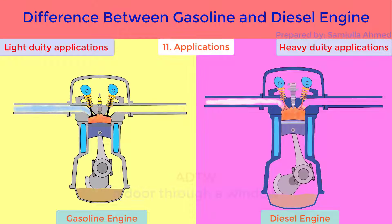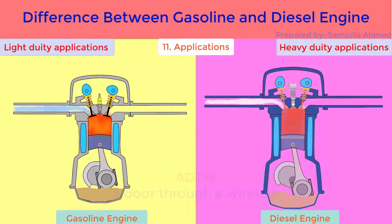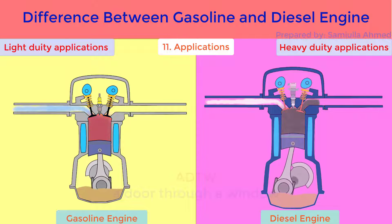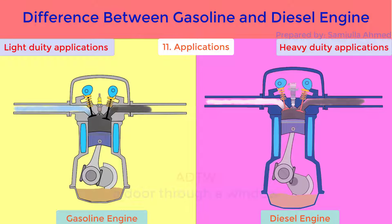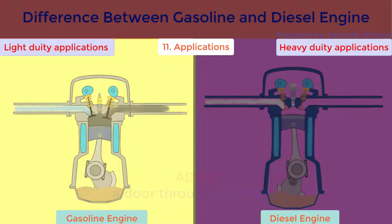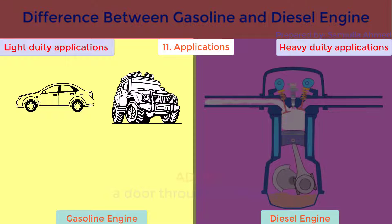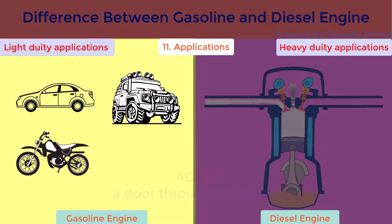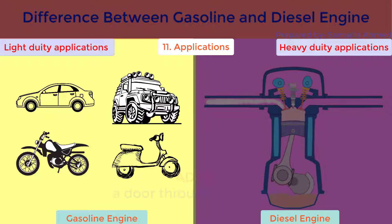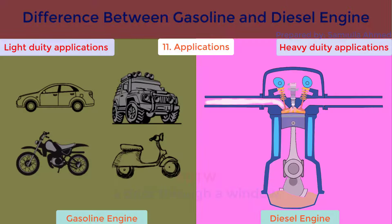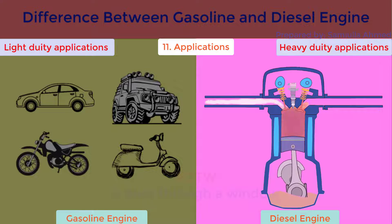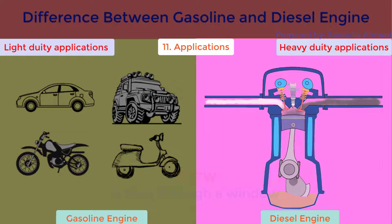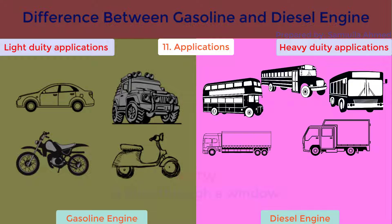Applications. Gasoline engines are used for light duty applications which require less power, e.g. car, jeep, motorcycle, scooters, etc. Diesel engines are used for heavy duty applications which require higher power, e.g. buses, trucks, locomotives, etc.